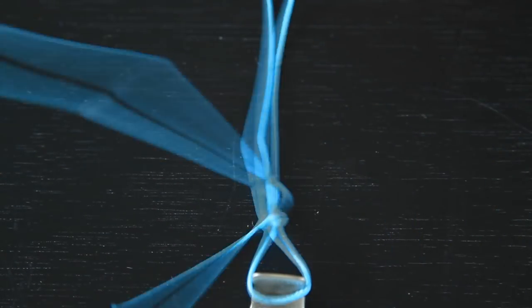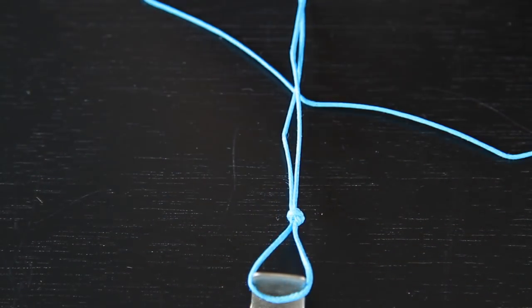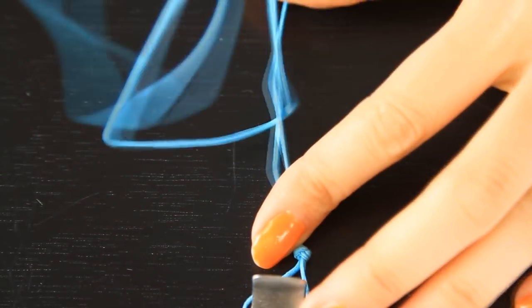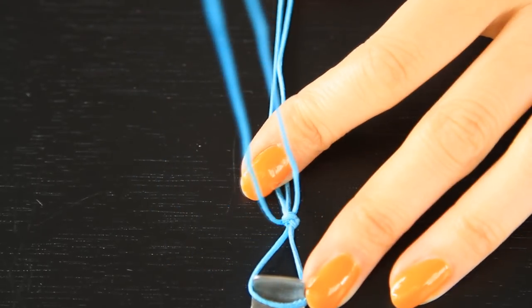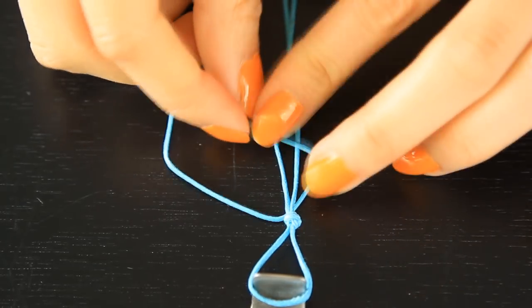Next, once you're done with that, you're going to need another string and this string needs to be a lot longer, about 50 to 60 inches long depending on how wide your wrist is. So with this long string, what you're going to do is put it behind the double cord and you want to center the string.